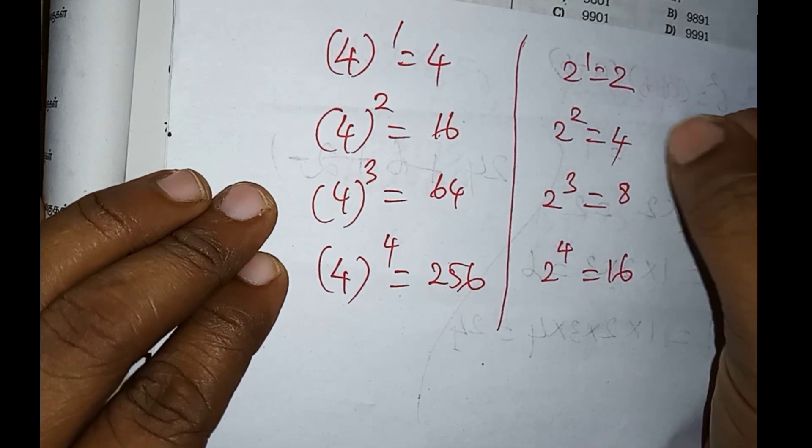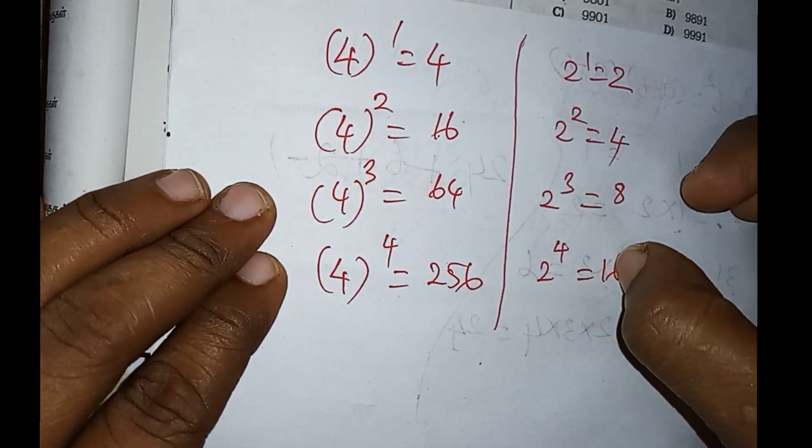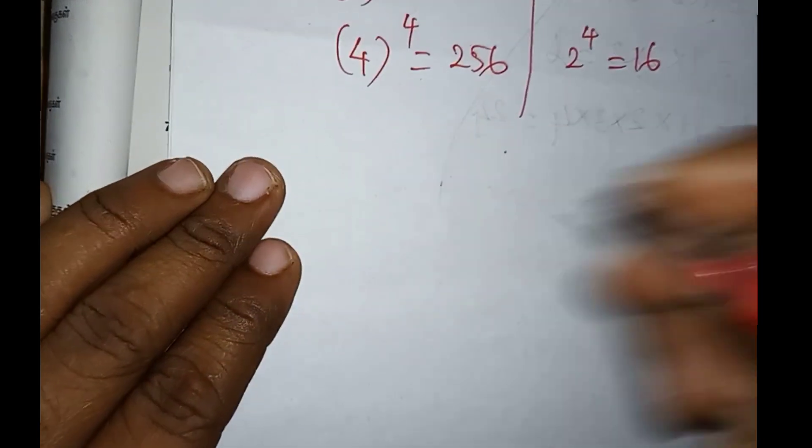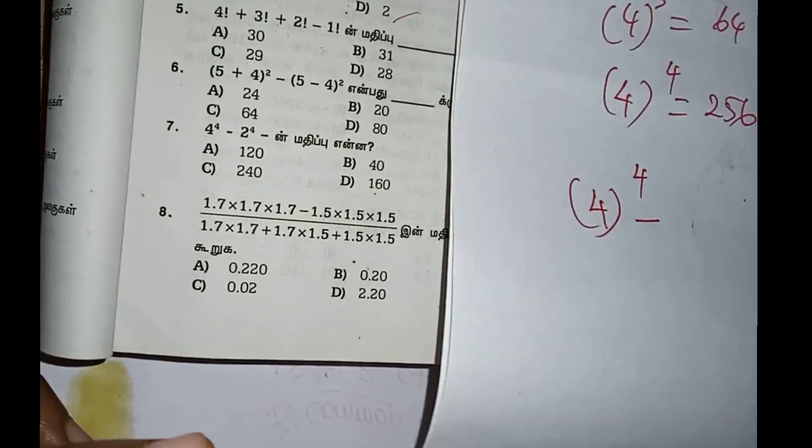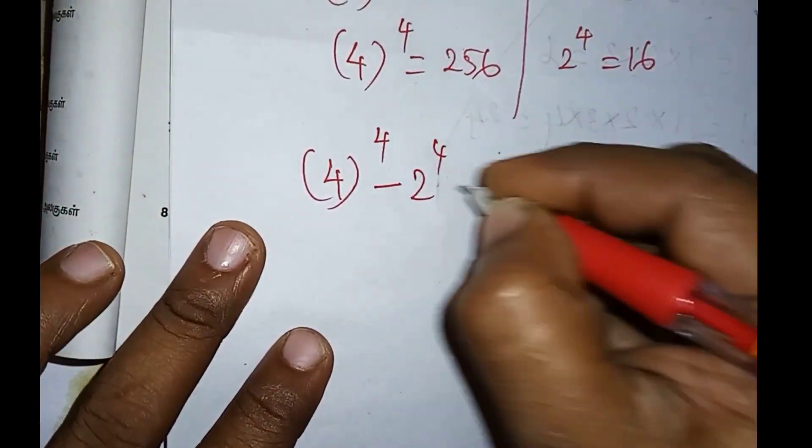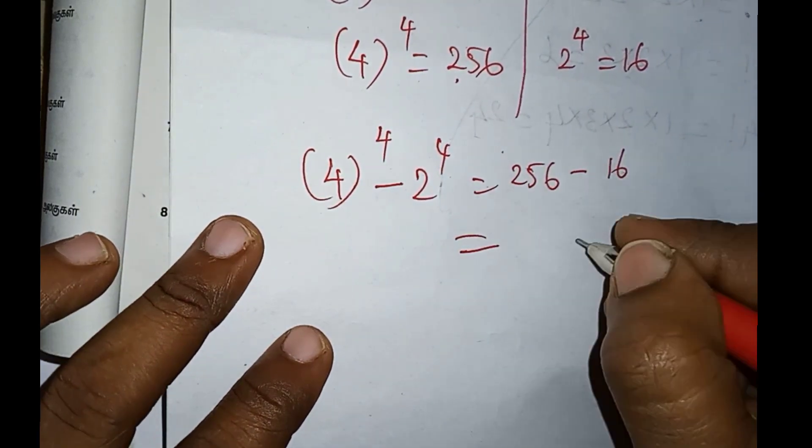2 power 1 value is 2, 2 square value is 4, 2 power cube value is 8, 2 power 4 is 16. So 4 power 4 minus 2 power 4, this power is 256 minus 16, and the answer is 240.